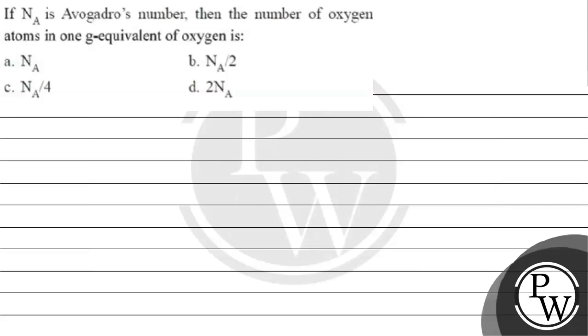Hello everyone, let's read this question. If NA is Avogadro's number, then the number of oxygen atoms in one gram equivalent of oxygen is?